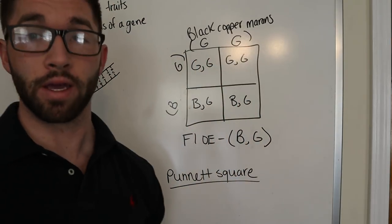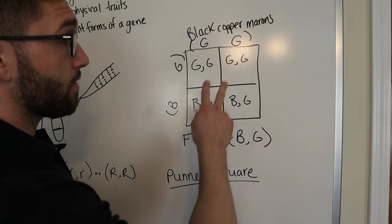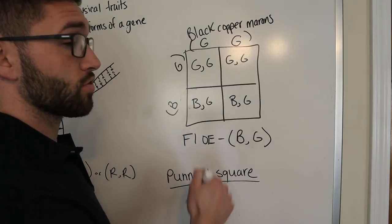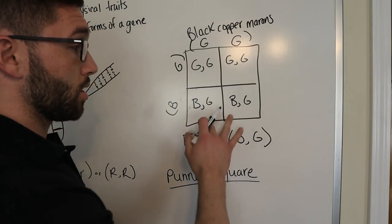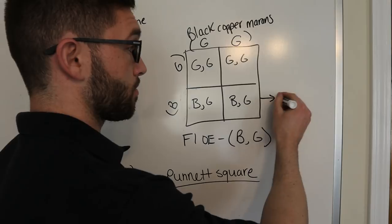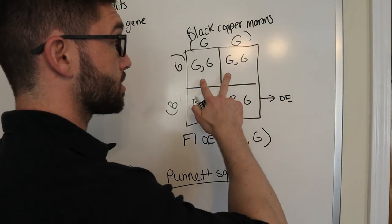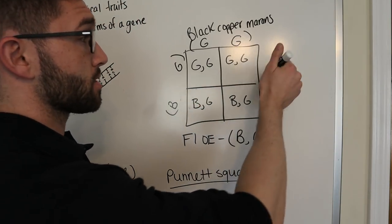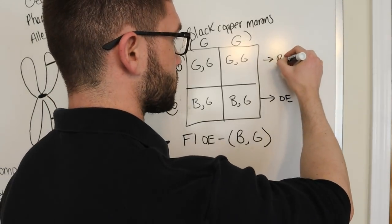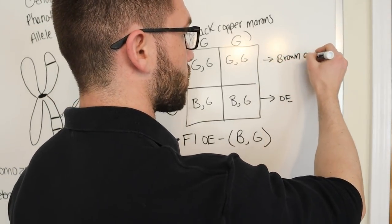And so, once again, G stands for brown egg genes. So, only 50% of the olive eggers from the F2 cross will lay olive again. These two. Since these contain two brown egg genes, there's a 100% chance they'll be brown egg layers. So, it's a 50-50 cross.